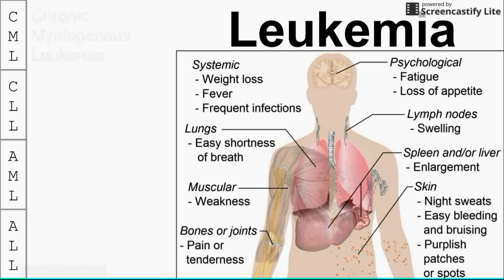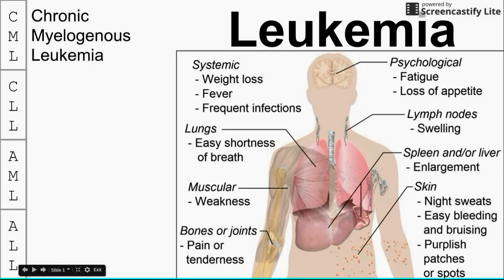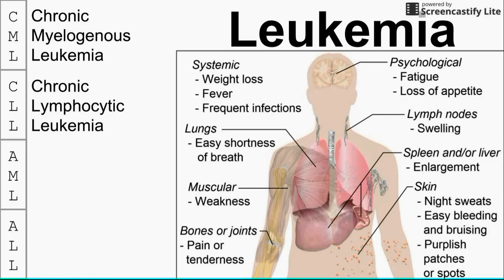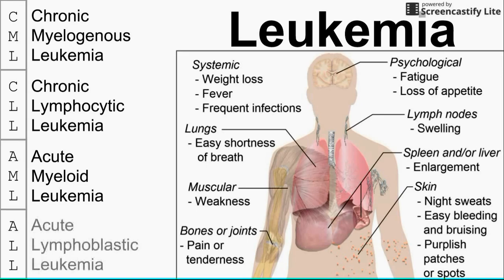The four leukemias we're talking about are chronic myelogenous leukemia (also called chronic myeloid leukemia), chronic lymphocytic leukemia (also called chronic lymphoid leukemia), acute myeloid leukemia (also called acute myelogenous leukemia), and acute lymphoblastic leukemia. Two are chronic and two are acute, which affects their presentation. Two are myelogenous and two are lymphoid — CML, CLL, AML, and ALL.